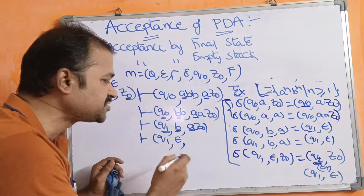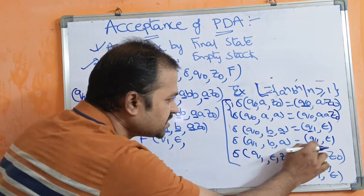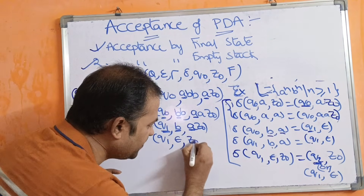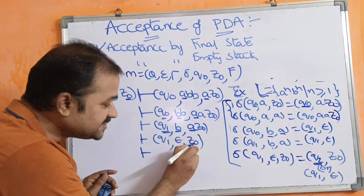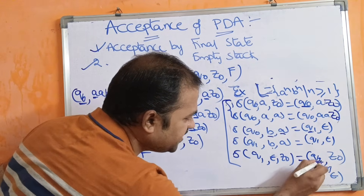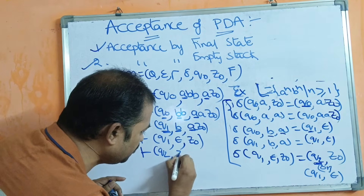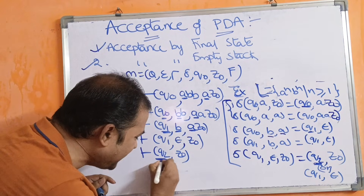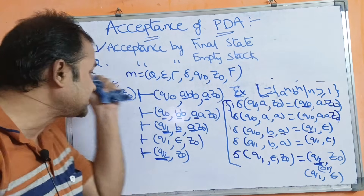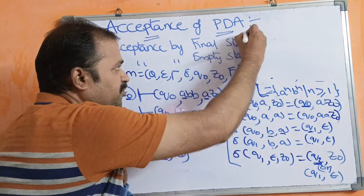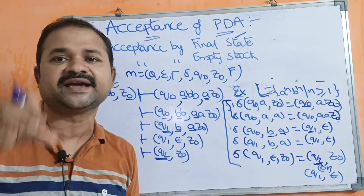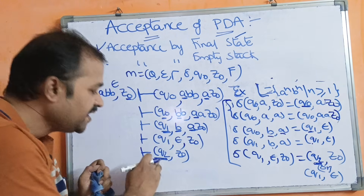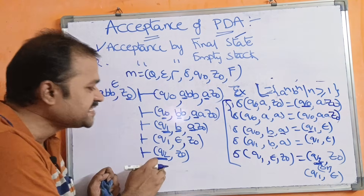When the input string is completely processed, we write it as epsilon — for example, aabb can be written as aabb followed by epsilon, where epsilon indicates the input string is empty. So now we have: current state q₁, input epsilon, stack topmost Z₀. Applying δ(q₁, ε, Z₀): we transition to q₂ with Z₀, so the stack still contains Z₀. The entire input string is completely processed and we reach final state q₂. Therefore, this language is accepted by the PDA.